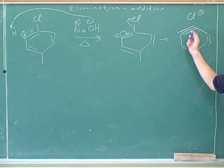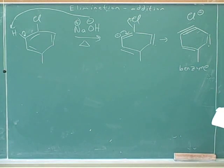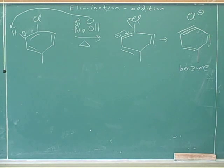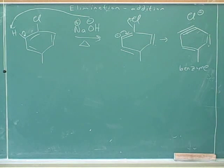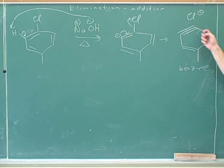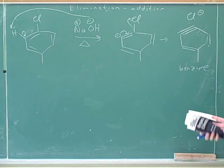Here is the benzyne intermediate. This benzyne is very unhappy and very reactive. Why? Because of the geometry of the bonds — a triple bond wants to take a linear geometry, but that's essentially impossible in a six-membered ring. So this is a very unhappy, very reactive situation. It won't stick around for long. Even without a charge, the strained geometry makes it extremely reactive.